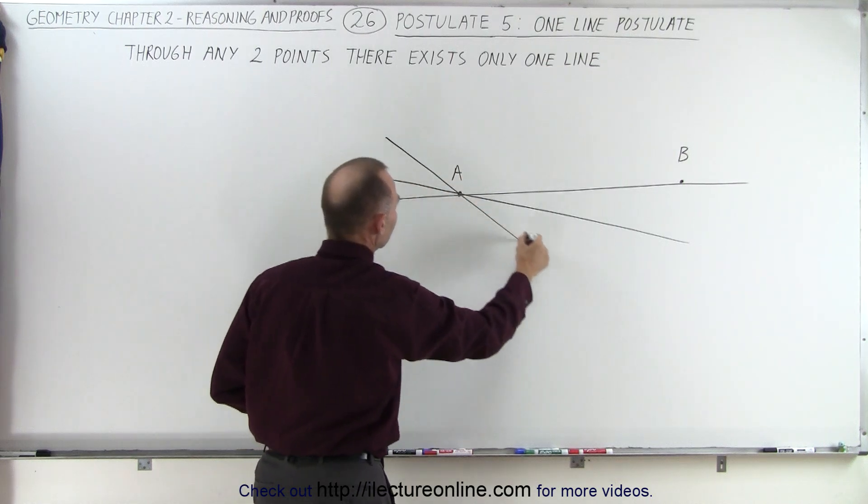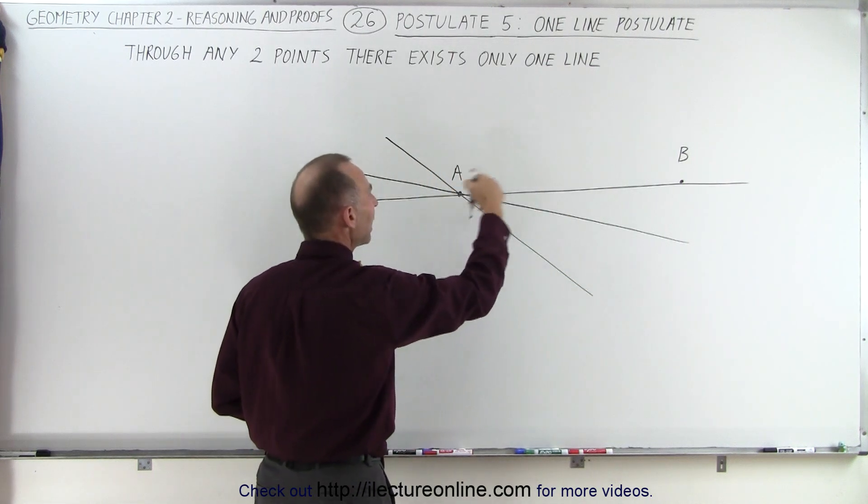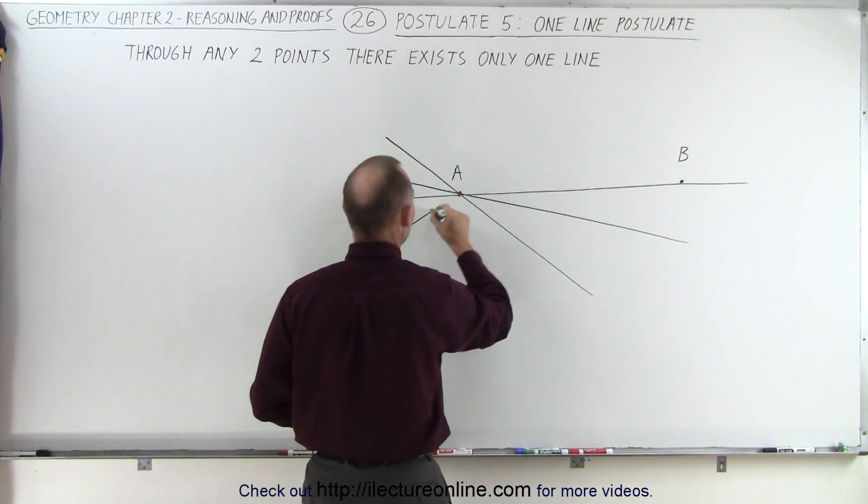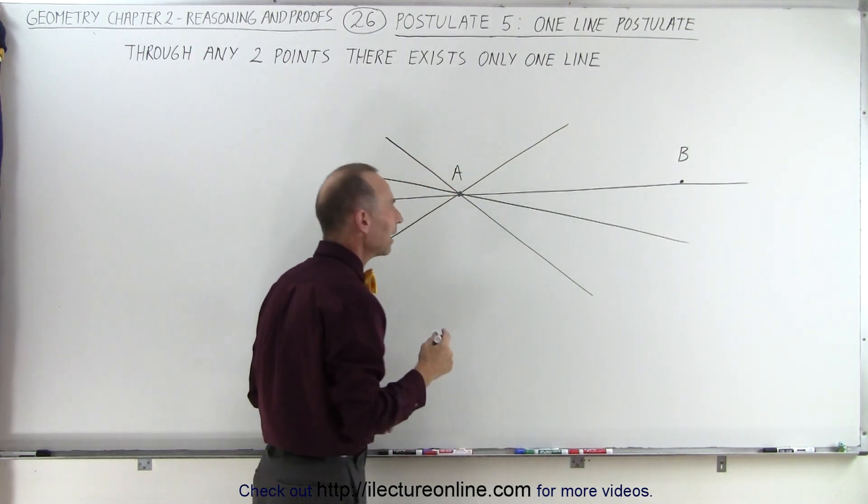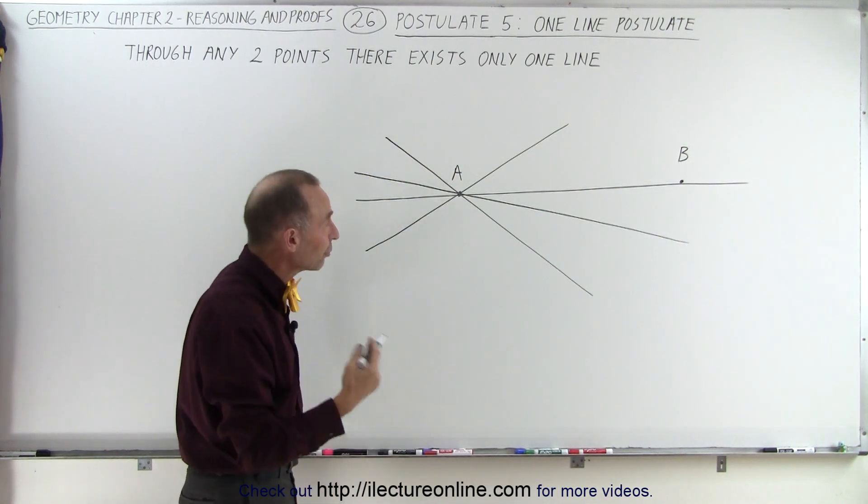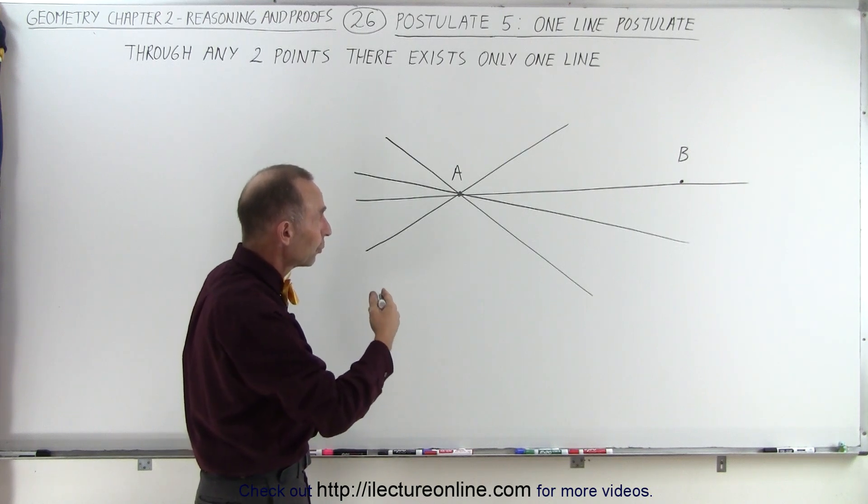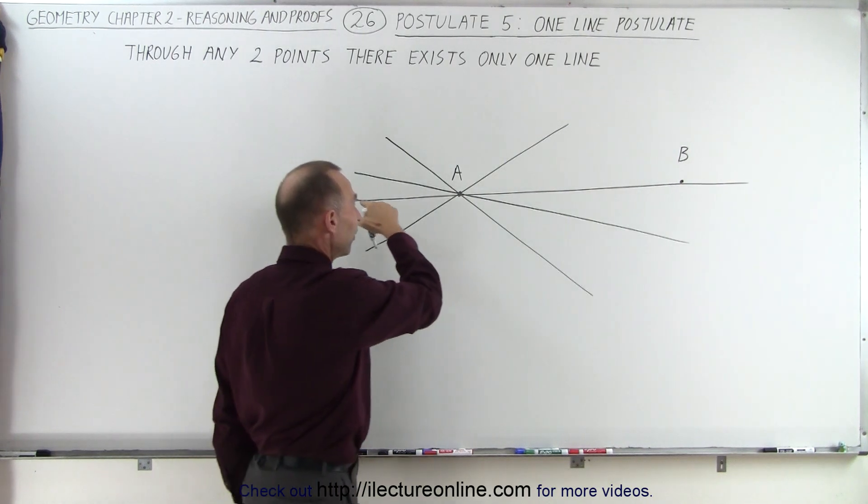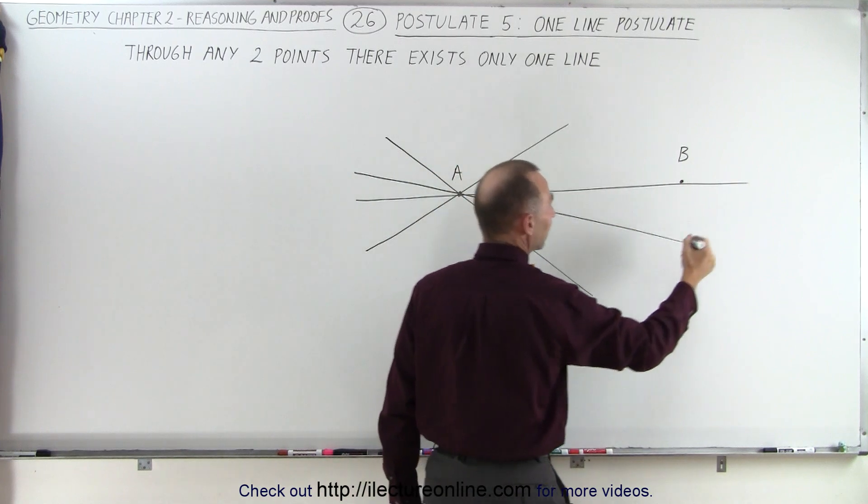If I take another line like this again it goes through A and not through B. Maybe I can draw a line like this. So you can see that it doesn't matter what other line that I draw, it's not going to go through the second point except if it's the very same line that I drew in the first place.